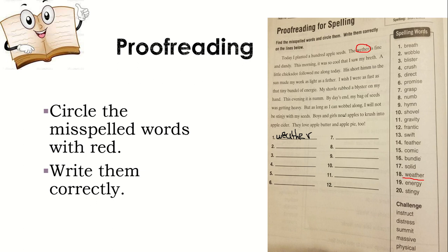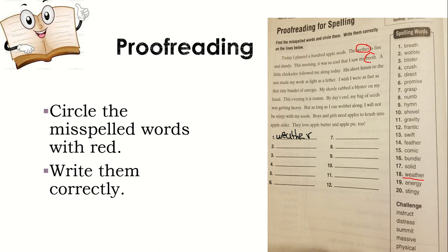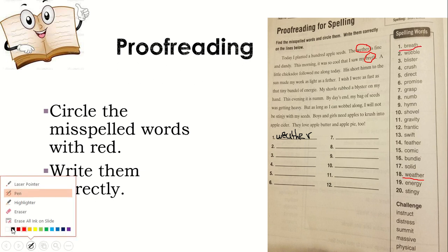The weather is fine and dandy. This morning, it was so cool that I saw my breath. Pay attention that the word breath is misspelled. So use your red pen or red marker, please, or red color and circle the word breath. It's incorrect. And you have to look in the list. The word breath. It's number one. Underline the word breath. And then write the word breath on the line. You can use the black pen or the red pen.